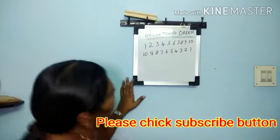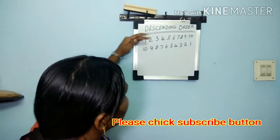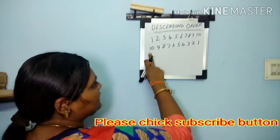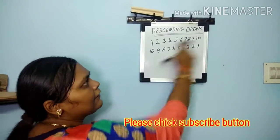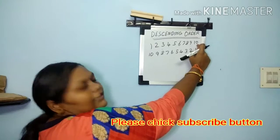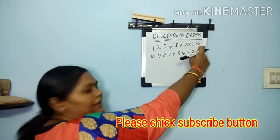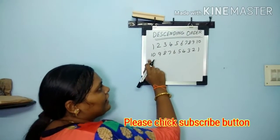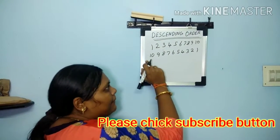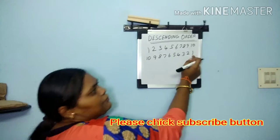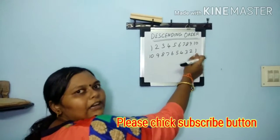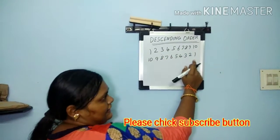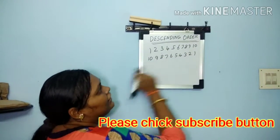Now differentiate them. We are starting here from the biggest number, 10, in this row. When it comes from big to small number, it is called descending order.